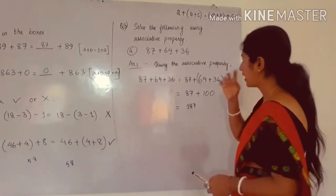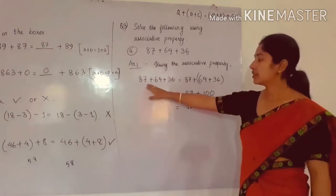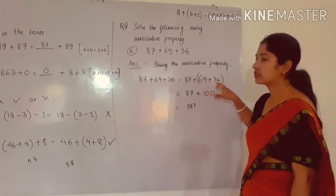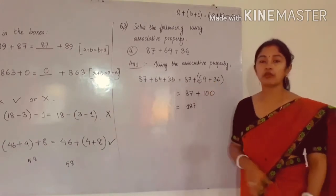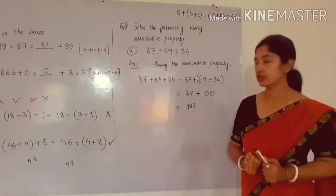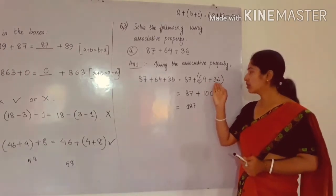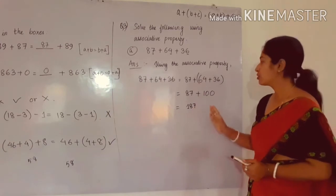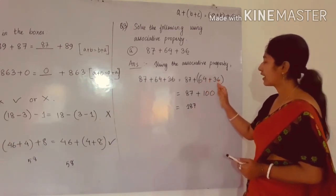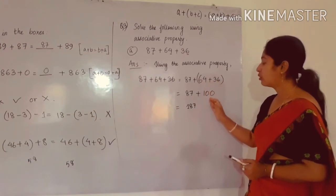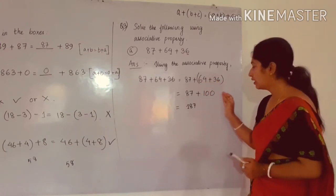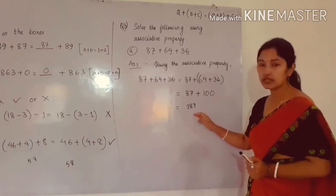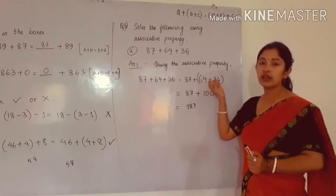This is the process you have to write using the associative property: 87 plus 64 plus 36 is equal to 87 plus, in bracket, 64 plus 36. According to associative property, we add 64 and 36 first. The answer will be 100, and 100 plus 87 will be 187. We take 64 and 36 in bracket because they add up to 100, and if we add any number to 100, we will directly get the answer.